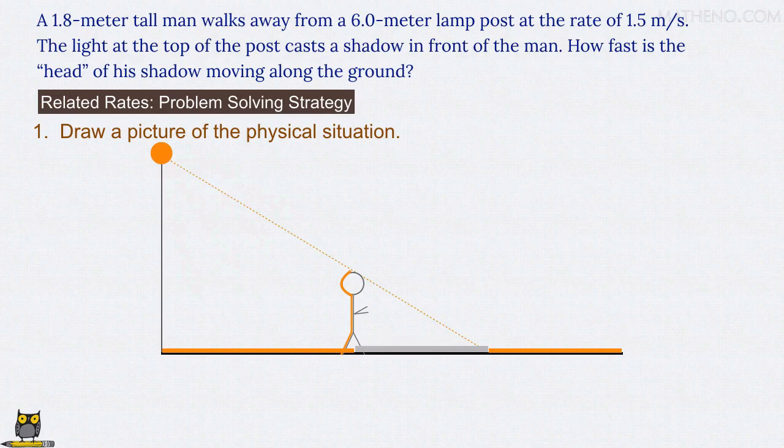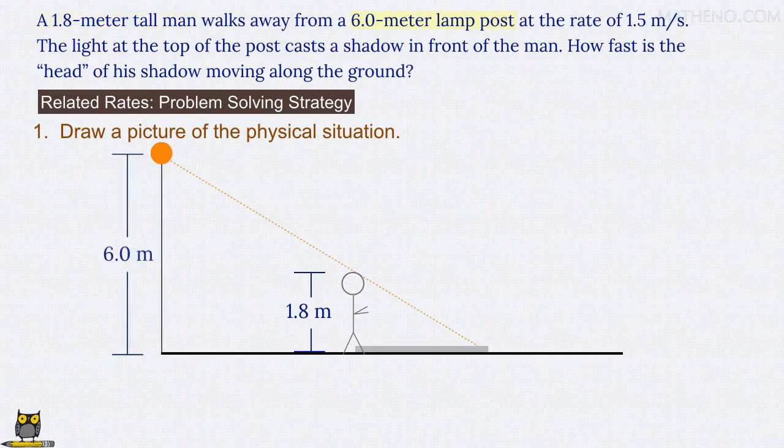Since we're really only interested in the shadow, let's focus on that along with the line that determines its length. The man is 1.8 meters tall, and the lamp post is 6.0 meters tall. Let's call the distance from the lamp post to the man x, and the distance from the lamp post to the head of his shadow l.